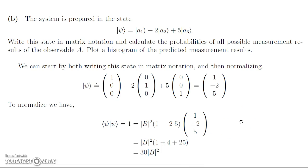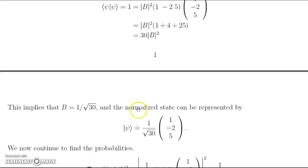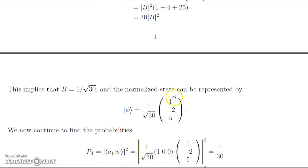Now to normalize, we take the inner product of the state vector with itself, set it equal to 1, and solve for the normalization constant — in this case capital B. We have the modulus of B squared times the row vector (1, -2, 5) dotted with the column vector (1, -2, 5). Solving through, we get 1 equals 30 times the modulus of B squared. Since the overall phase does not matter, we let B equal 1 over root 30, and the normalized state is psi equal to 1 over root 30 times the column vector (1, -2, 5).